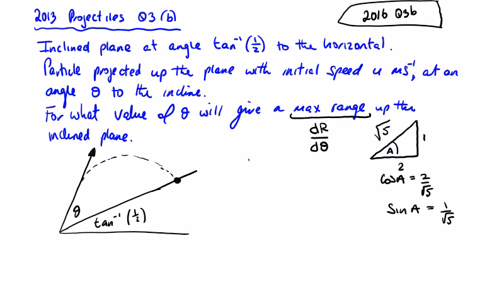These trig values help us find the accelerations. With g acting straight down and the i-direction shifted to be parallel to the incline, the acceleration in the i-direction is minus g cos a, which is minus 2g over root 5, and the acceleration in the j-direction perpendicular to the incline is minus g sin a, which is minus g over root 5.